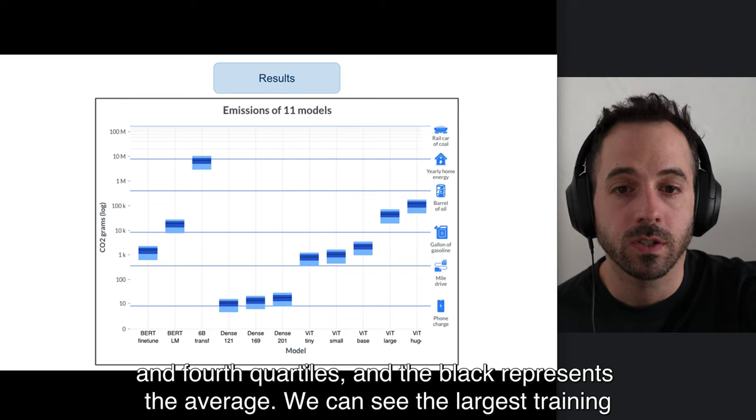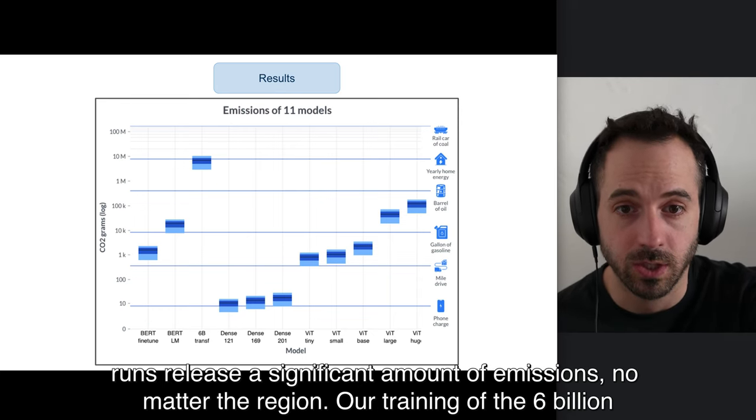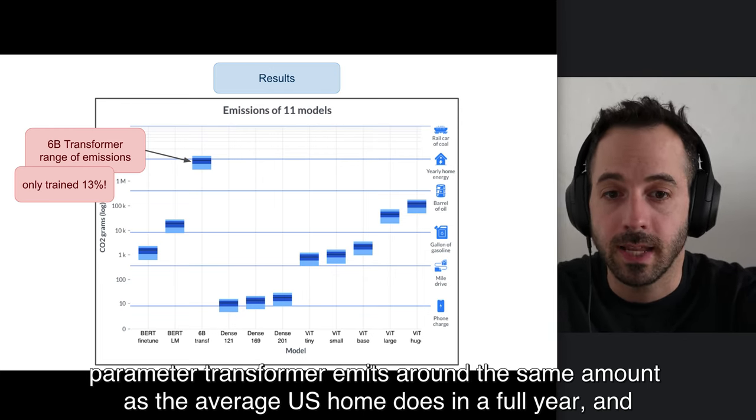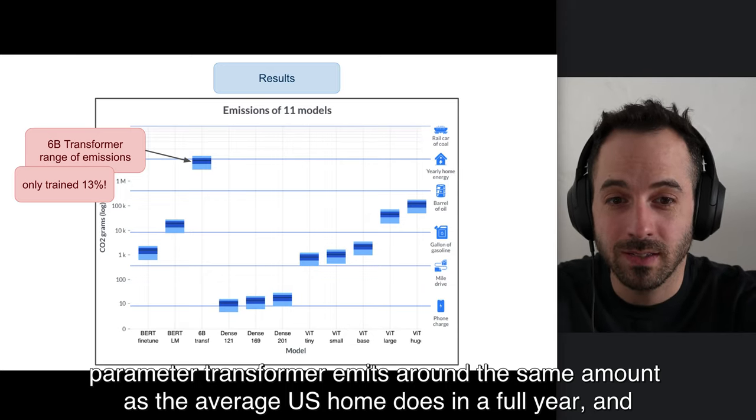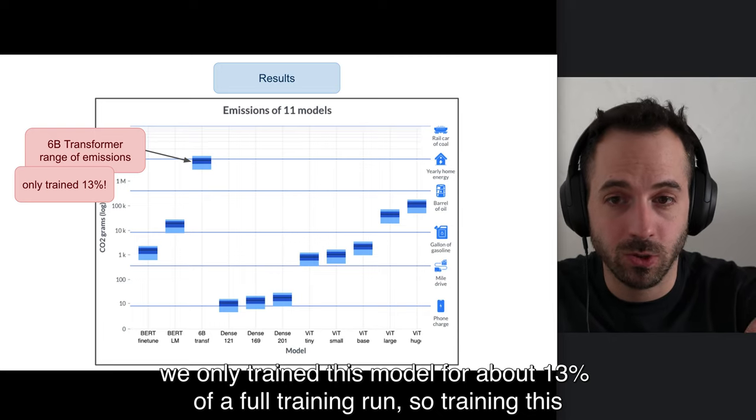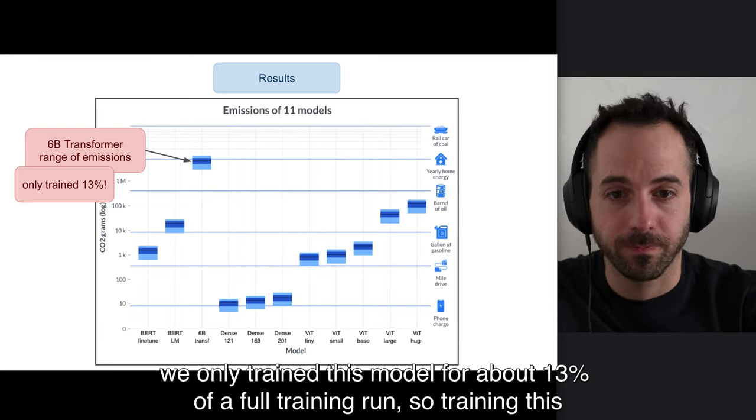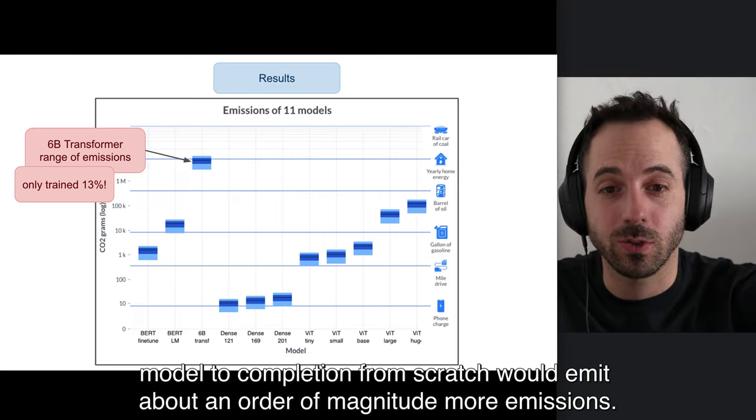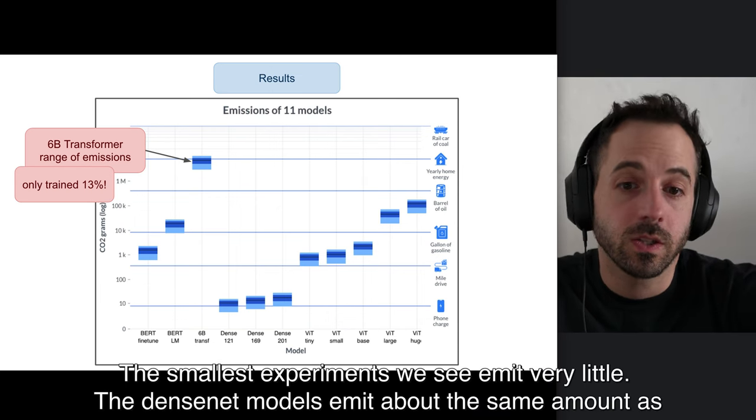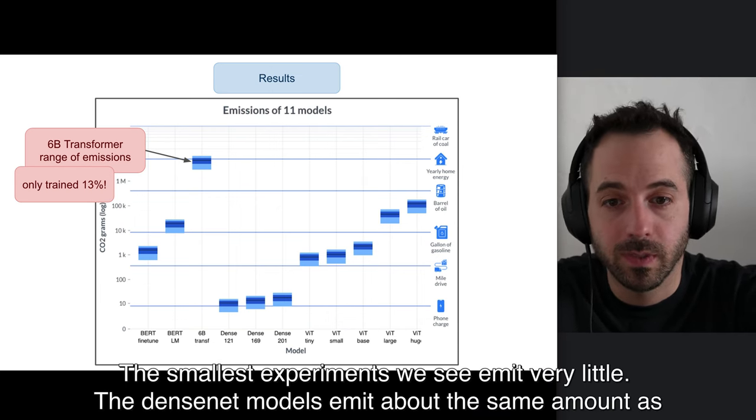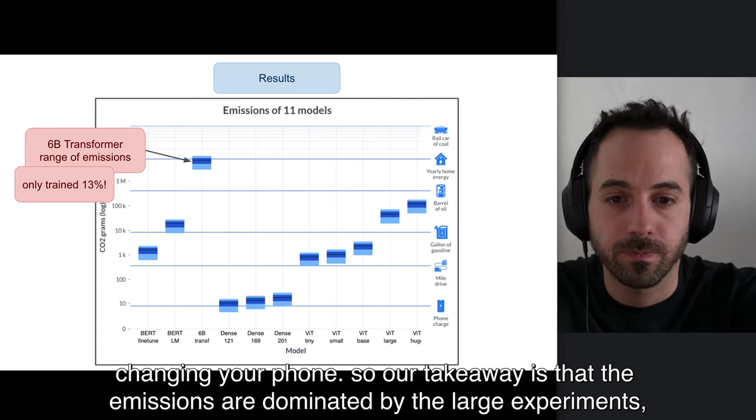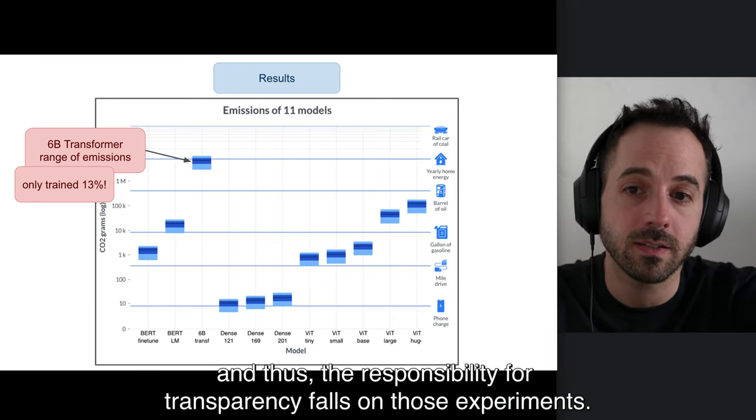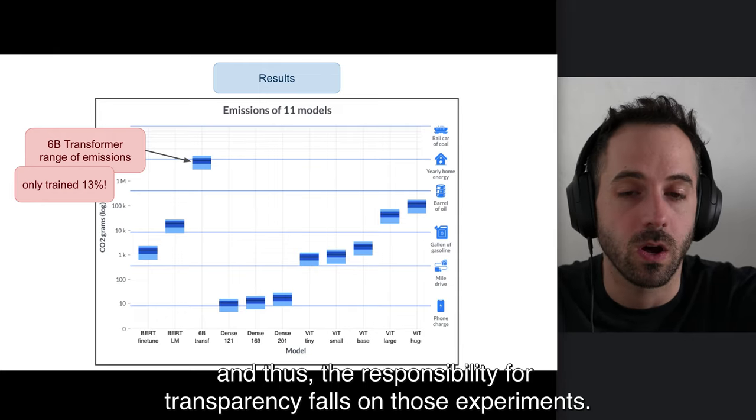We can see the largest training runs release a significant amount of emissions, no matter the region. Our training run of the 6 billion parameter transformer emits around the same amount as the average US home does in a full year, and we only trained this model 13% of the full training run. So training this model to completion from scratch would actually emit about an order of magnitude more emissions. The smallest experiments emit very little. The DenseNet models are about the same as charging your phone. Our takeaway here is that the emissions are dominated by the largest experiments, and thus the responsibility for transparency falls on those experiments.